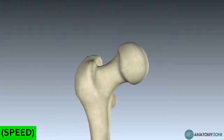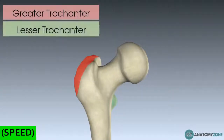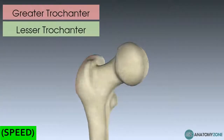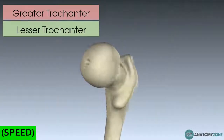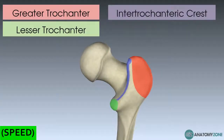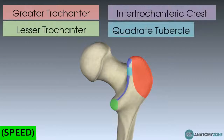The next features to notice are the two bumps — the greater and lesser trochanter. Between them you have two lines: on the front it's called the intertrochanteric line, and on the back it's called the intertrochanteric crest because it looks more like a crest than a line. There is also the quadrate tubercle, located two-thirds of the way up the trochanteric crest — a small bump for the quadratus femoris muscle, a small lateral rotator of your hip.